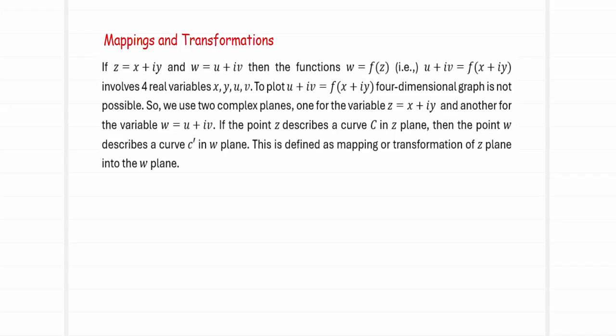Mappings and transformations. Suppose we have a complex number of the form z = x + iy, and one more complex number of the form u + iv, and we have the function defined as w = f(z). So we are mapping u + iv to the function f(x + iy). Now this mapping will involve four real variables: x, y, u, and v.